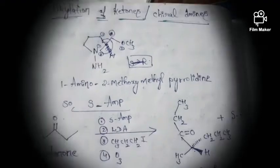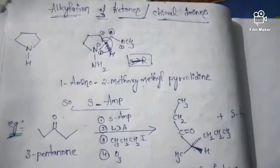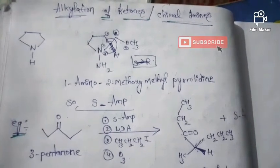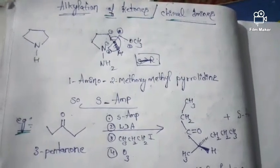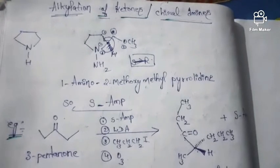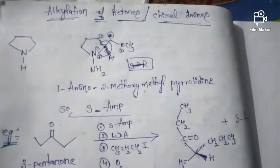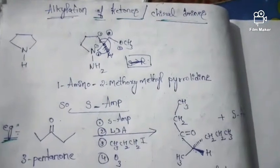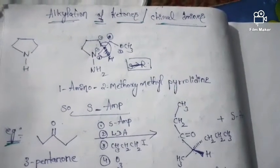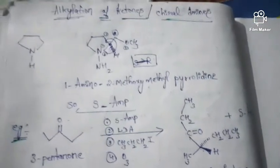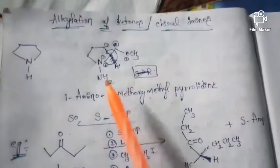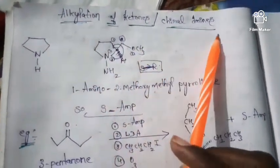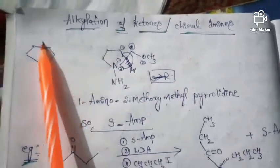Hello friends, good morning, welcome to our chemistry class. Today we are going to discuss one of the most important topics in asymmetric synthesis. The concept which we are going to discuss today is alkylation of carbonyl compounds, especially ketones — specifically, alkylation of ketones using chiral imines.